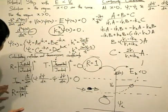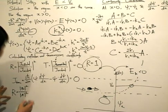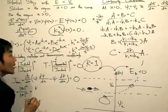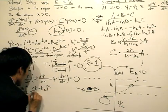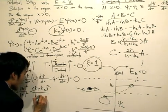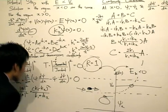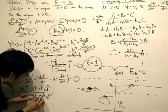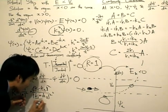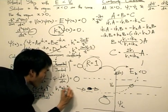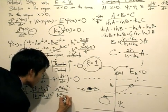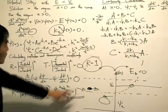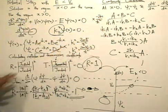Now we can formally calculate the reflection coefficient. Taking the magnitude of b over a and squaring: the magnitude of a squared cancels, so we just need to square the top and bottom. Taking the magnitude of k₁ minus ik₂ squared gives k₁² plus k₂², and the denominator gives k₁² plus k₂². These are the same, so r equals one — total reflection is confirmed.